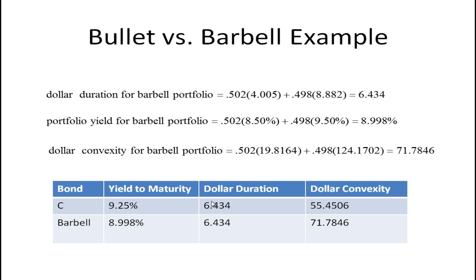I've summarized it here. The yield on the two portfolios is going to be different. Bond C has a yield of 9.25%. The yield on the barbell strategy is just a weighted average — 8.998%, so just fractionally less than 9%. The dollar convexity is again a weighted average of the dollar convexity of A and B, coming to 71.7846.